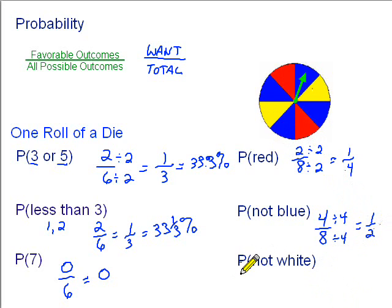How about this last one? The probability of landing on a spot that is not white. Well, how many of our spots on the spinner are not white? Blue's not white, yellow's not white, red is not white. All of them, all of them are not white, so that would be 8. Still 8 total spots, so we have 8 over 8, and that would simplify to 1 over 1, or 1. A probability of 1 means that something is certain to happen. No matter what, it's going to happen. So in this case, getting a spot that's not white is definitely going to happen, because there are no white spots to stop on.